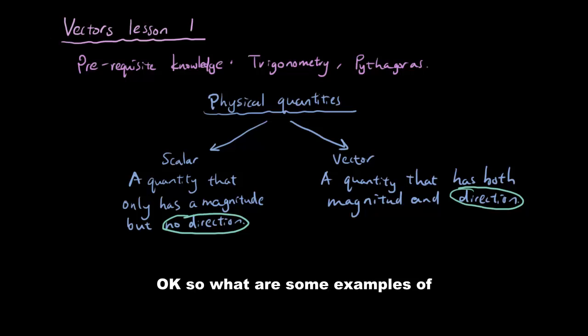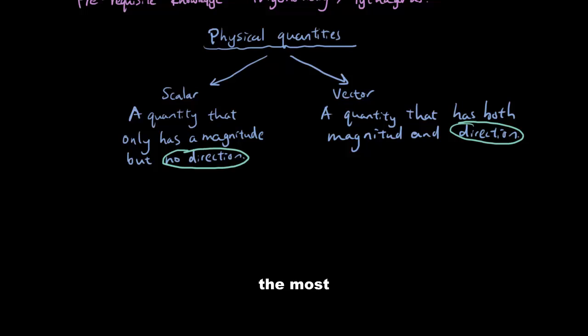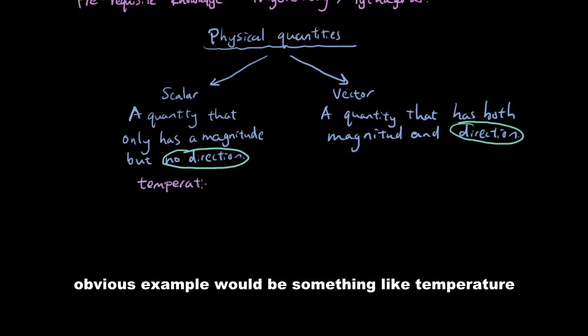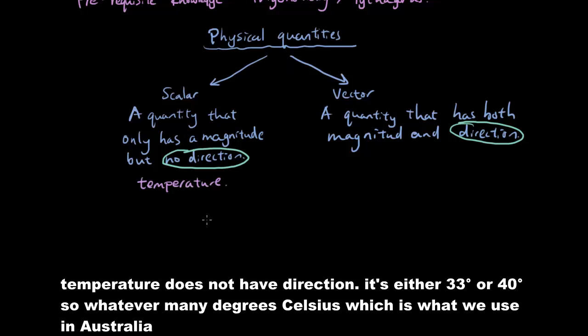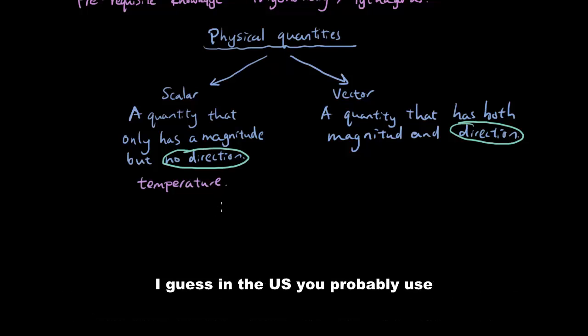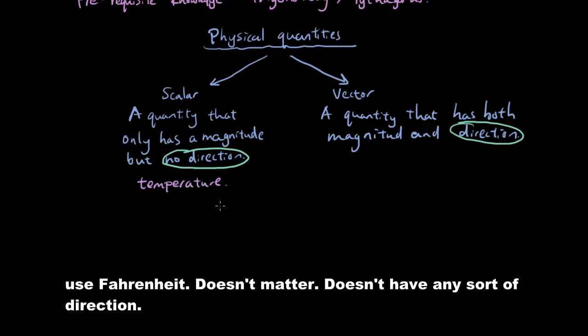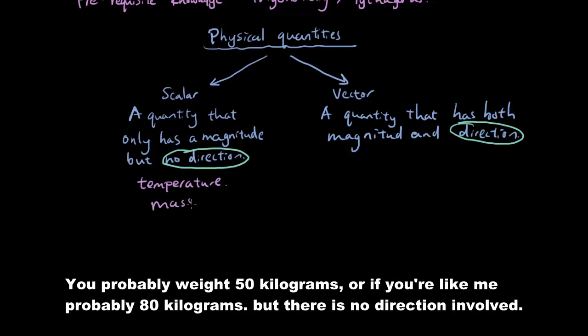So what are some examples of quantities that do not have direction? The most obvious example would be something like temperature. Temperature does not have direction. It's either 33 degrees or 40 degrees or whatever many degrees Celsius, which is what we use in Australia. I guess in the US, you probably use Fahrenheit. Doesn't matter. Doesn't have any sort of direction. Another example would be mass. You probably weigh 50 kilograms, or if you're like me, probably 80 something kilograms, maybe a bit more, but there is no direction involved.